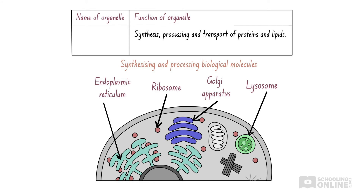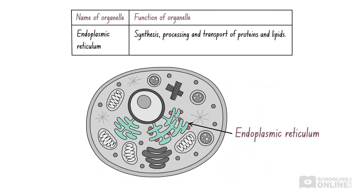Let's continue to the third row. We must identify an organelle that synthesizes, processes, and transports proteins and lipids. In our second lesson on animal cells, we introduced four organelles involved in synthesizing and processing proteins and lipids: the endoplasmic reticulum, ribosomes, the Golgi apparatus, and lysosomes. This organelle is not a lysosome, and it isn't a ribosome either, because ribosomes only perform protein synthesis — they aren't involved in making lipids. Both the Golgi apparatus and endoplasmic reticulum process and transport proteins and lipids, but the endoplasmic reticulum is also responsible for building them, while the Golgi apparatus is not. Therefore, the organelle is the endoplasmic reticulum.